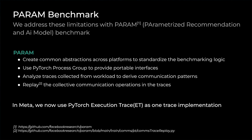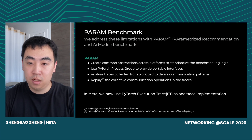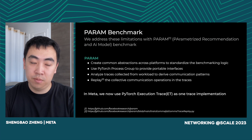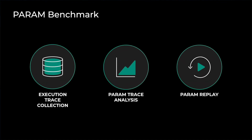We address these limitations with PARAM benchmark. PARAM creates common abstractions across platforms to help standardize the benchmarking logic. It uses PyTorch process group APIs to provide a portable interface across different communication libraries like NCCL, MPI, and UCC. It supports analyzing the traces collected from real workloads to derive communication patterns. And finally, it replaces the collective communication operations following the order and message size in the trace. At Meta, we now use PyTorch execution trace as one trace implementation. I will describe PARAM benchmark from three aspects: execution trace collection, PARAM trace analysis, and PARAM replay.